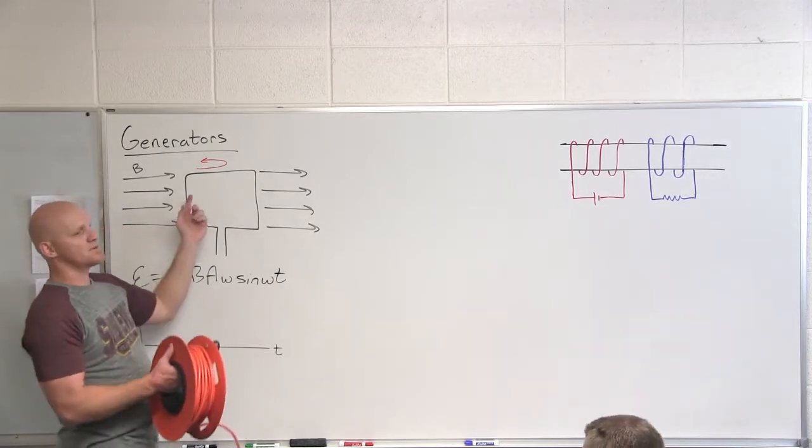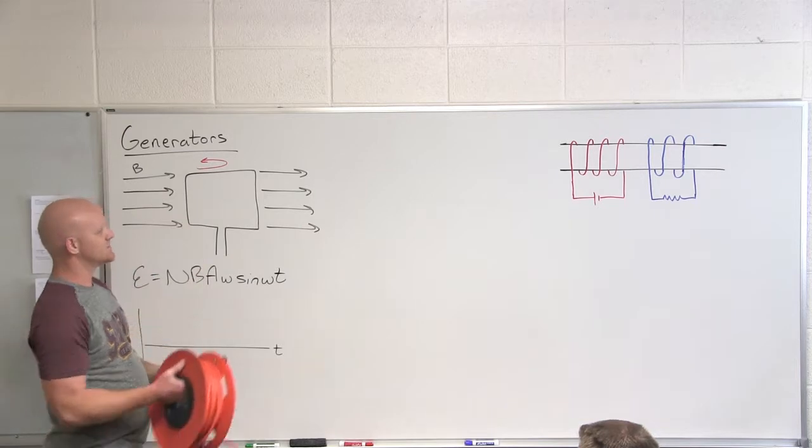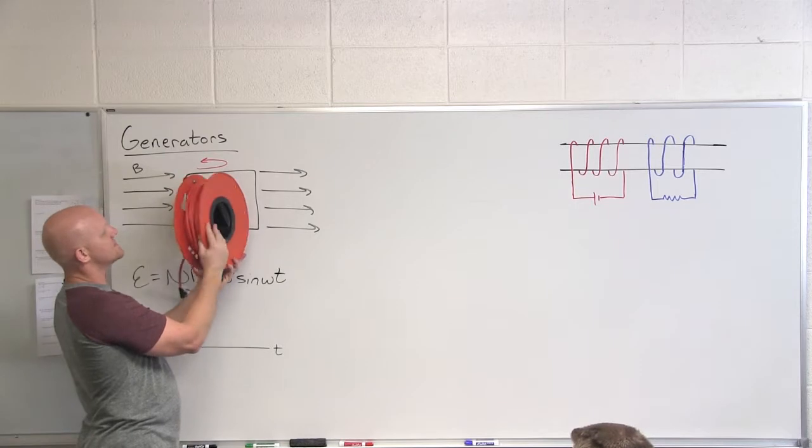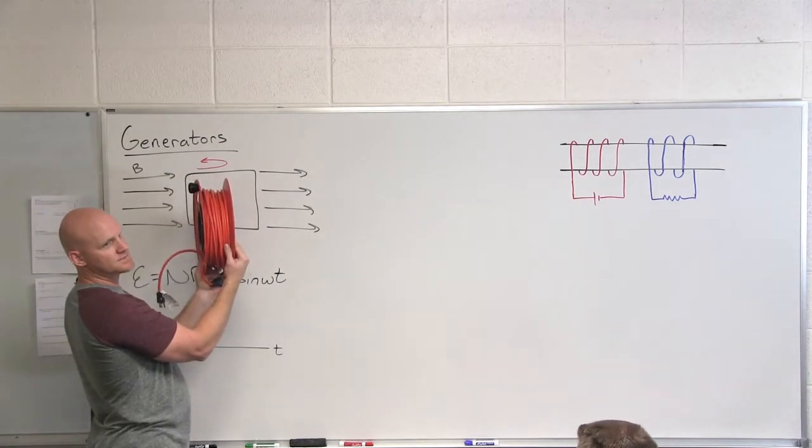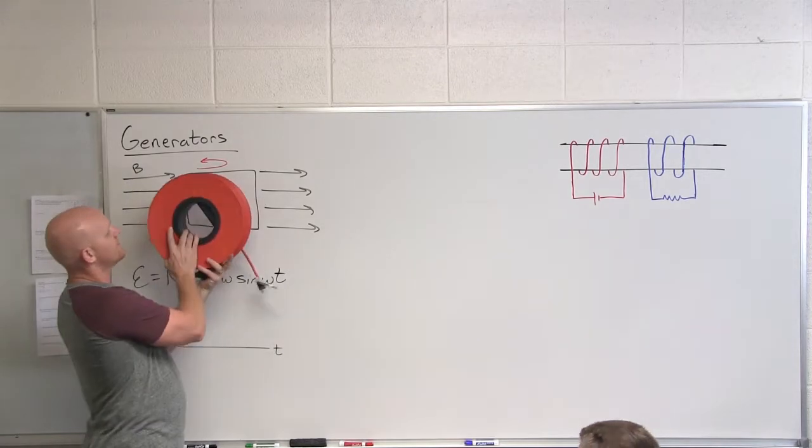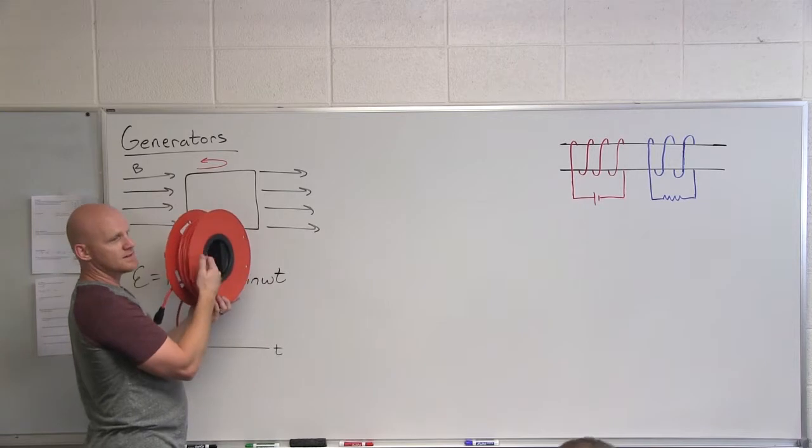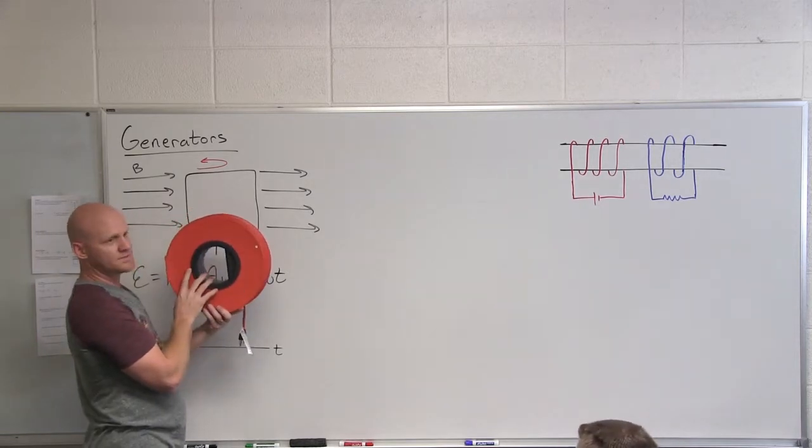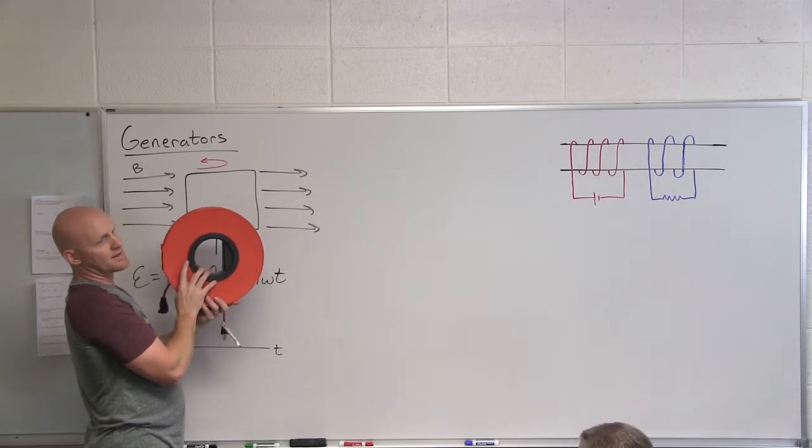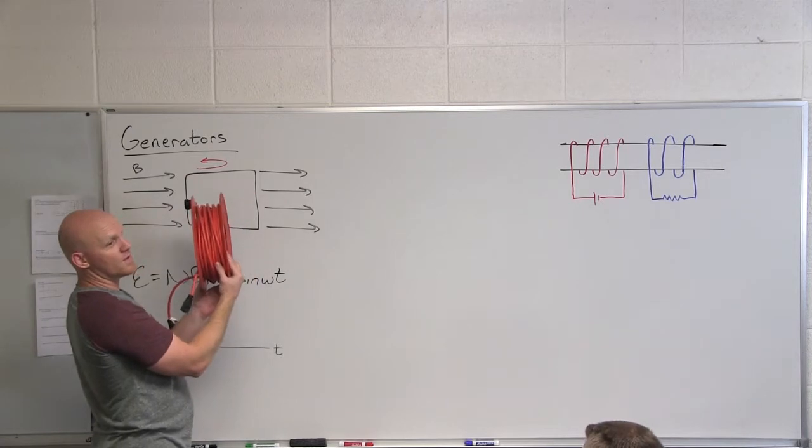So in this case, as this spins around, let's look at Lenz's law application. So let's go through this: 90 degrees. As I go from here to here, is the flux increasing or decreasing? Increasing. And so during this whole time, which way is the induced current inside this coil? In this case I got the magnetic field pointing to the right.